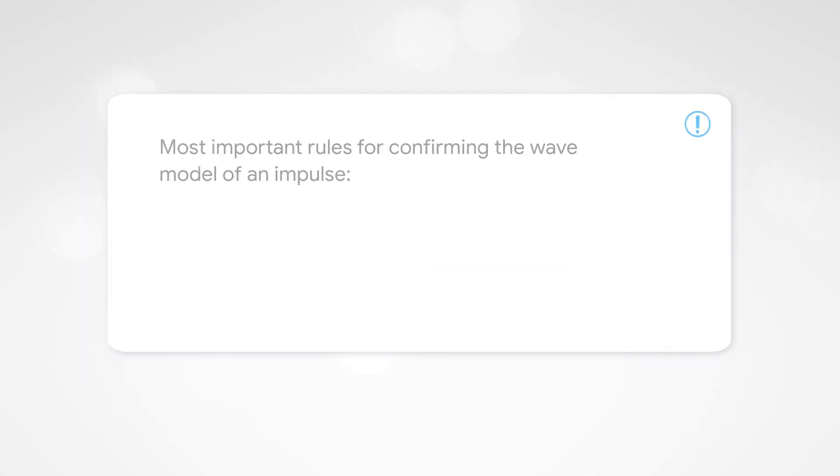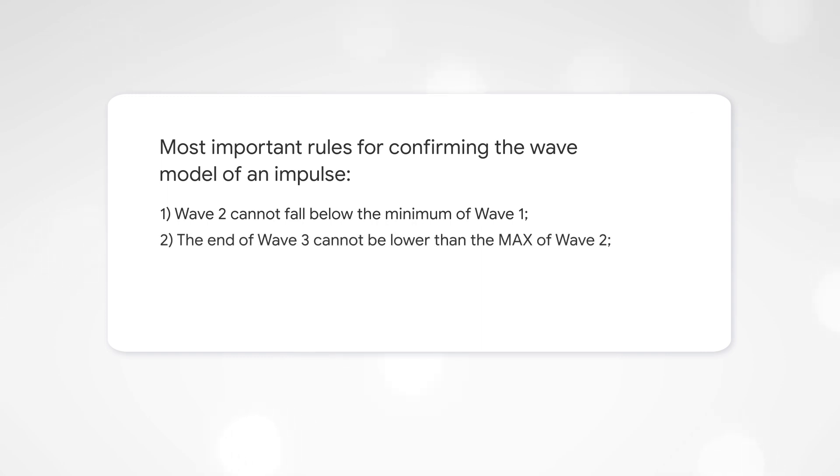To summarize, we outline the most important rules for confirming the wave model of an impulse. Wave two cannot fall below the minimum of wave one. The end of wave three cannot be lower than the maximum of wave two. Wave three cannot be the shortest of the impulse waves. The end of wave four cannot be lower than the maximum of wave one.